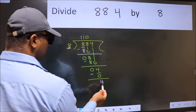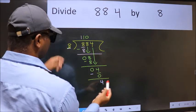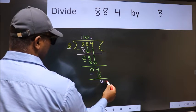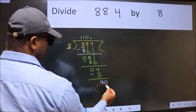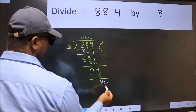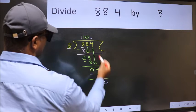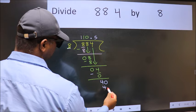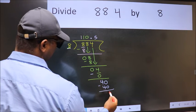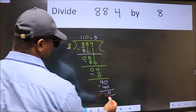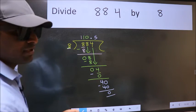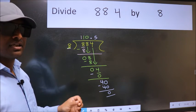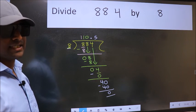And 4 is smaller than 8. So now we can put dot and take 0. So 40. When do we get 40 in the 8 table? 8 fives, 40. Now we subtract. We get 0. Did you understand where the mistake happens? You should not do that mistake.